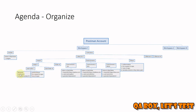You can also write test cases, authorization, and pre-request scripts inside a request. When you write those things at the folder level, if you define authorization at the folder level and that folder has, say, 10 requests inside it, you don't need to mention the authorization information at each request. You can lift it up to the folder level and let the request inherit from its parent, which in this case is the folder.